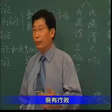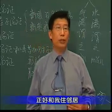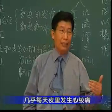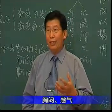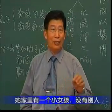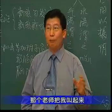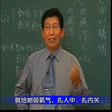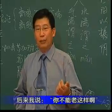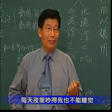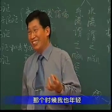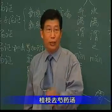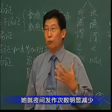我们学校有个老师，过去我和他住邻居，那个时候他也就是五十多岁吧，几乎每天夜里就发心绞痛、胸闷憋气。因为和我住邻居，他一发起来他就害怕，他家里就有一个小女孩，没有别人，那是个女老师，他就把我叫起来。我怎么办呢，就给他吸氧气、扎人中、扎内关，有时候给他含一片消心痛，就缓解。后来我说你不能老这样，咱们请刘老师看看吧，刘渡舟老师。刘老师给他开始开的就是桂枝去芍药汤，吃了一段他就说夜里发作次数明显减少。